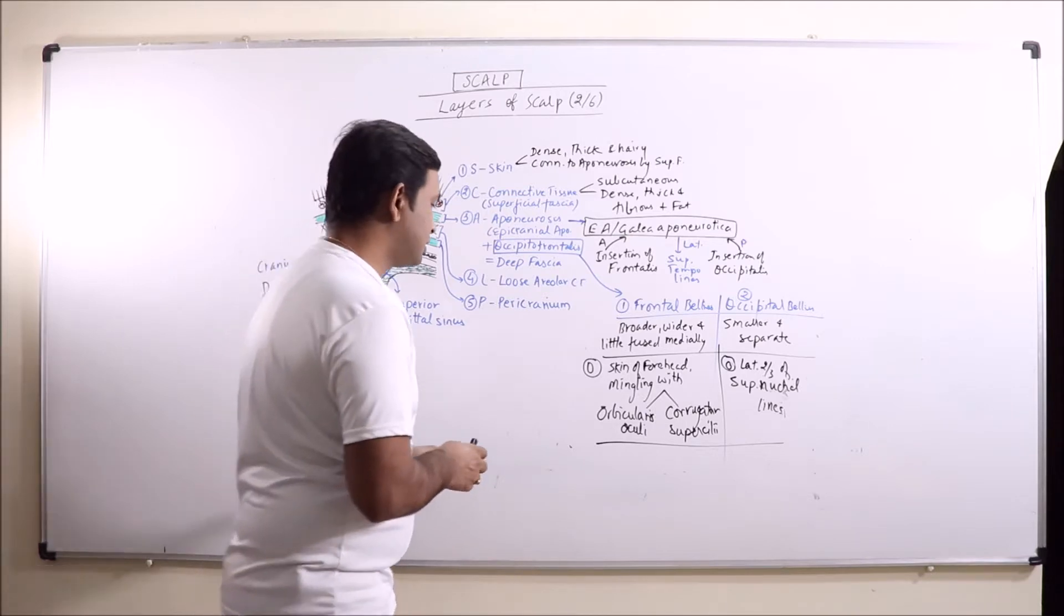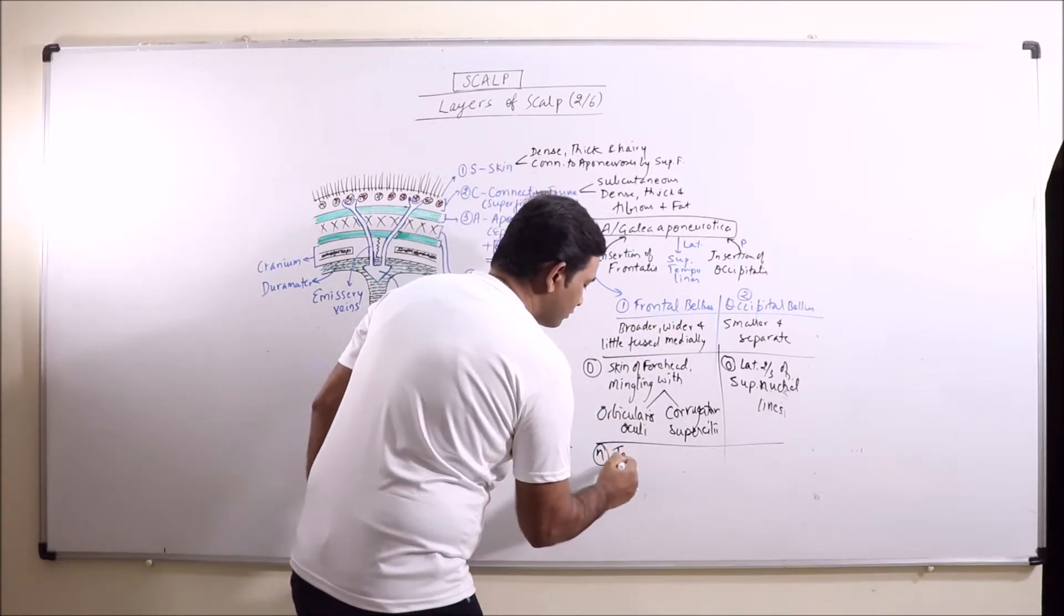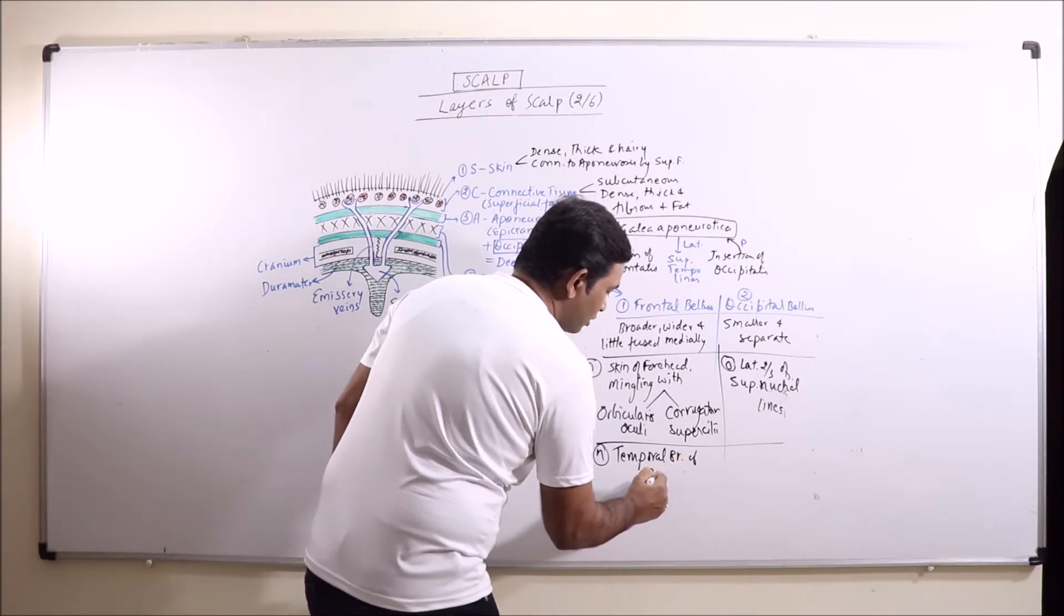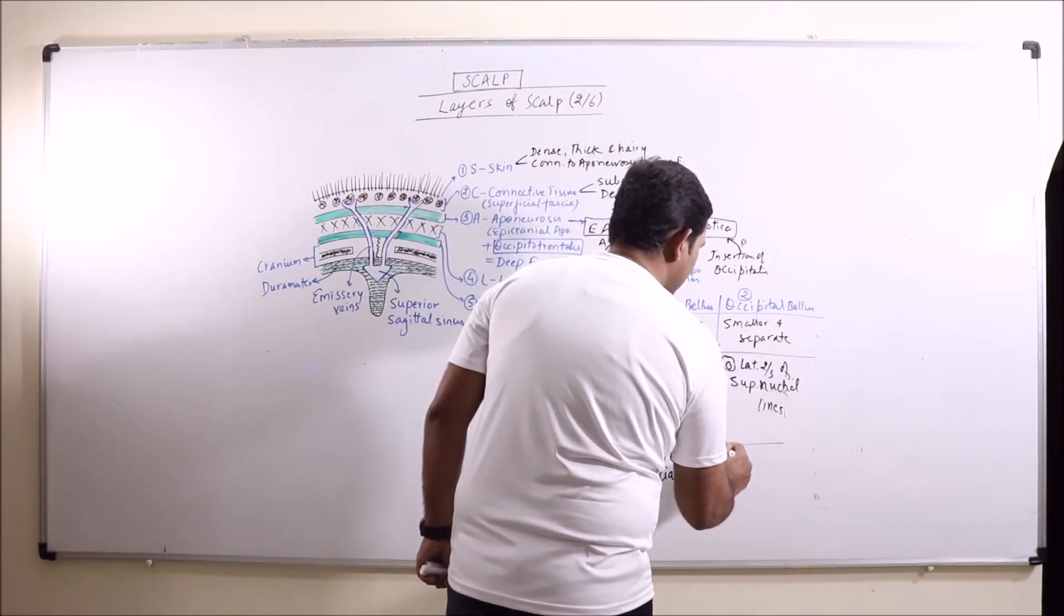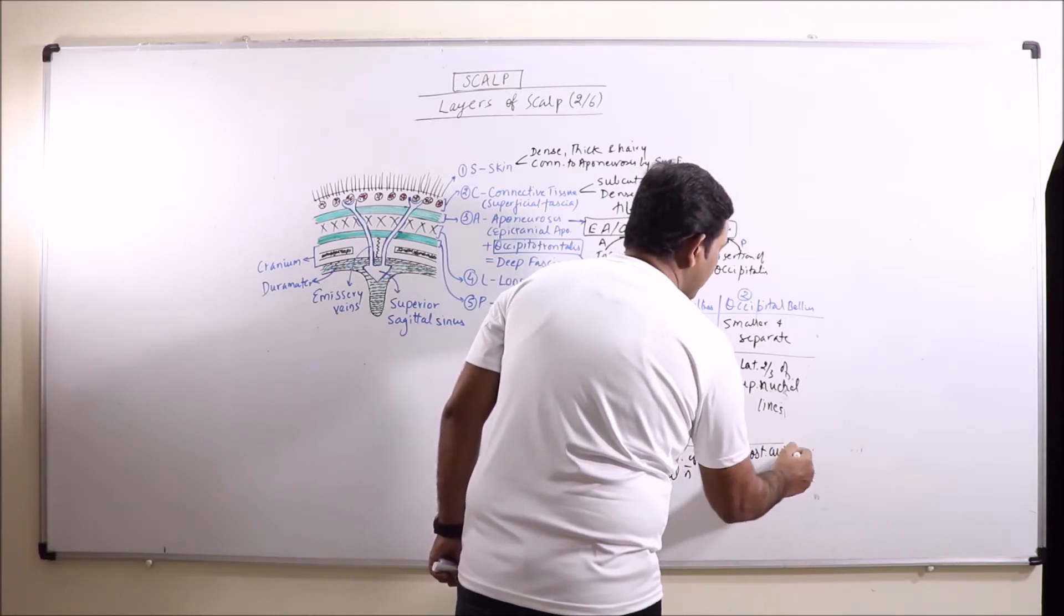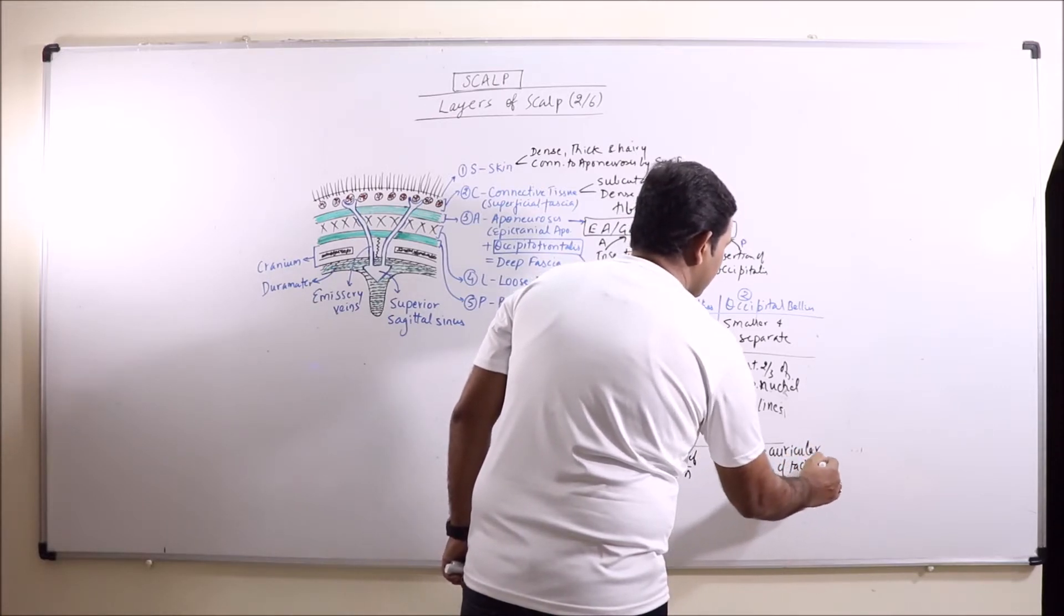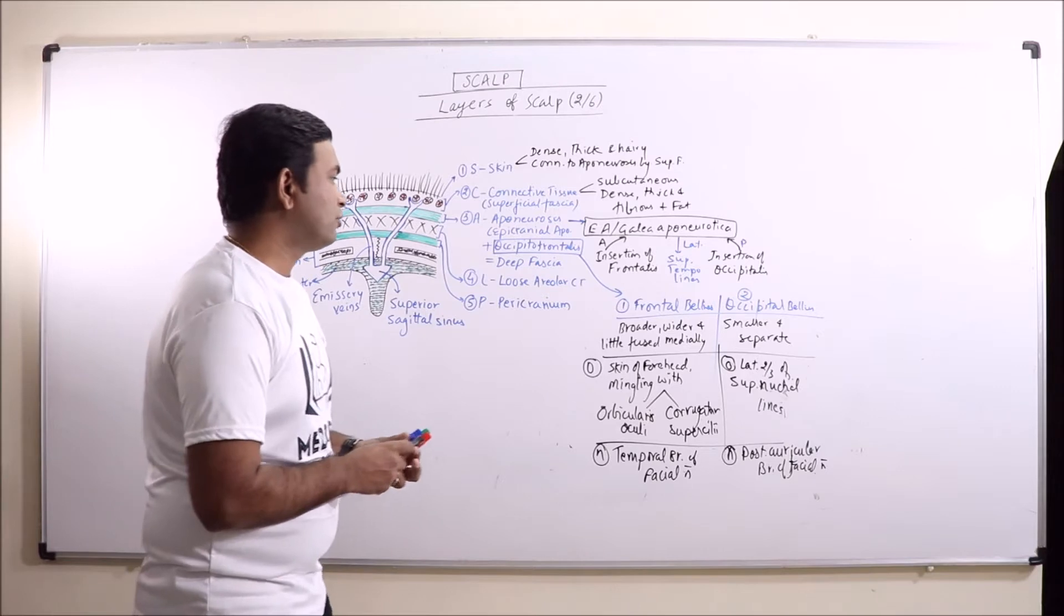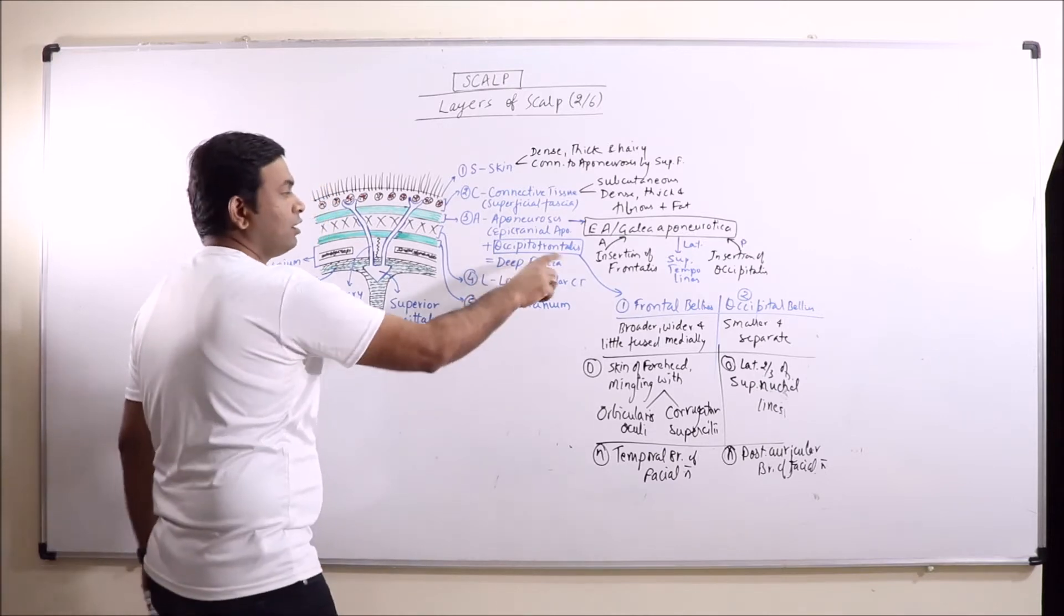If nerve supply is concerned, frontal bellies receive the temporal branch of facial nerve, while the occipital bellies receive the posterior auricular branch of facial nerve. So this is occipitofrontalis. So occipitofrontalis along with epicranial aponeurosis, these form the deep fascia of the scalp.